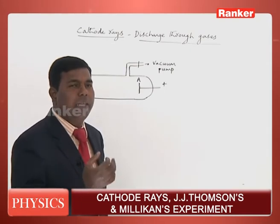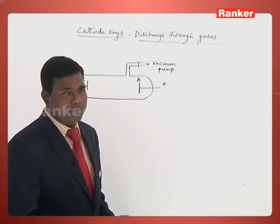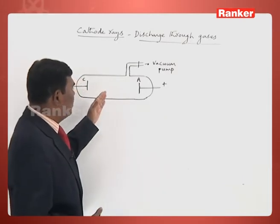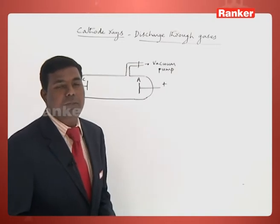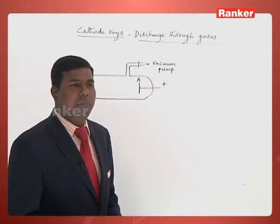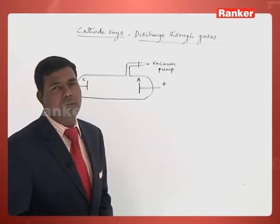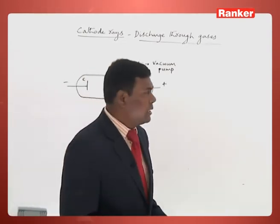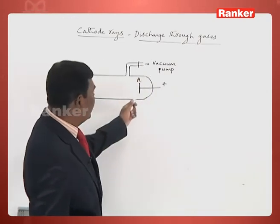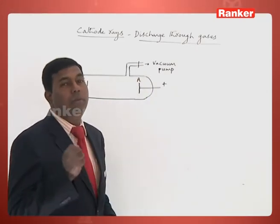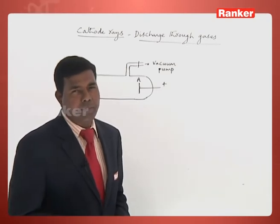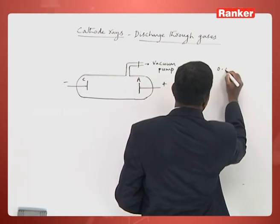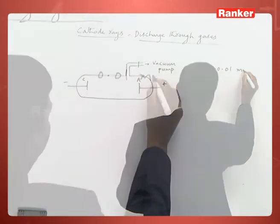A vacuum pump is used to change and adjust the pressure inside the glass tube according to our requirement. It is observed that when the applied potential is very large — about 15,000 to 20,000 volts — and the pressure is very low, about 0.01 millimeters of mercury, a dark space fills the entire tube. This is called Crookes' dark space.